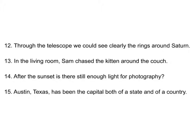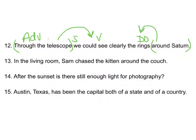'Through the telescope, we could see clearly the rings around Saturn.' 'Through the telescope' and 'around Saturn' are the phrases. We could see what? The rings — the direct object. 'Through the telescope' modifies 'could see,' the verb: adverbial phrase. 'Around Saturn' — the rings around Saturn — modifies 'rings,' a noun: adjectival phrase.